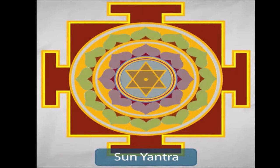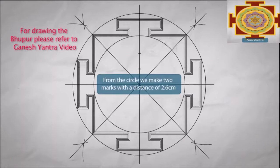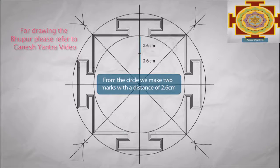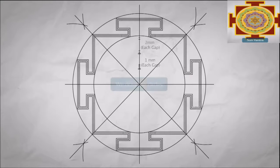Sanyantra. We make a circle touching the bhapur. From the circle we make two marks with a distance of 2.6cm. And we make marks for the other circles. We draw the circles.